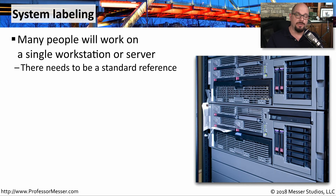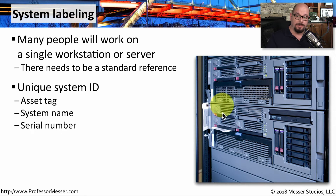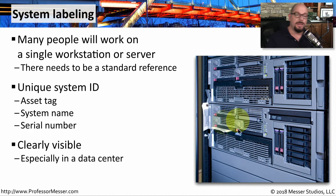The same thing applies for the servers we might be using. There's a physical device in the data center, and you need some way to tell someone else exactly which component you're referencing. You can do that by creating a unique system ID for every device — it may have an asset tag, a system name, and a serial number. You want to make this clearly visible on the devices, with physical tags and serial numbers written on the devices themselves, so you can hand someone the documentation of exactly what needs to be performed on that exact device.